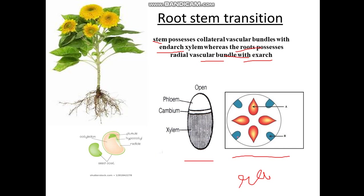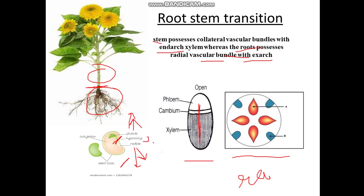In a radial vascular bundle, phloem and xylem are found alternately. In stem, the phloem and xylem are found on the same radii. In a plant, there is a root and a stem, so there must be a point where root-stem transition takes place. To understand this, consider the seed — the seed forms the plumule and radicle. The plumule forms the stem portion and the radicle forms the roots. There is a hypocotyl region where the root-stem transition zone is found, where the exarch xylem changes into the endarch type.